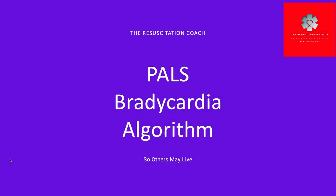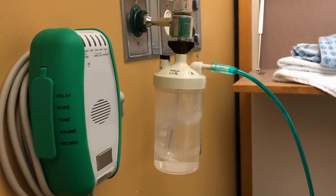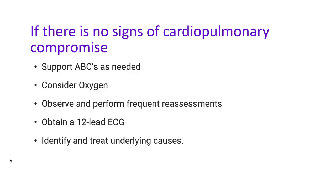The PALS Pediatric Bradycardia Algorithm outlines the steps for evaluating and managing the child who presents with symptomatic bradycardia. Once you identify bradycardia, assess for signs of cardiopulmonary compromise. If there are no signs of cardiopulmonary compromise, support the ABCs as needed, consider oxygen, observe and perform frequent reassessments, get a 12-lead ECG and identify and treat underlying causes.